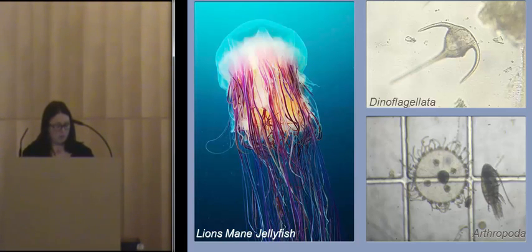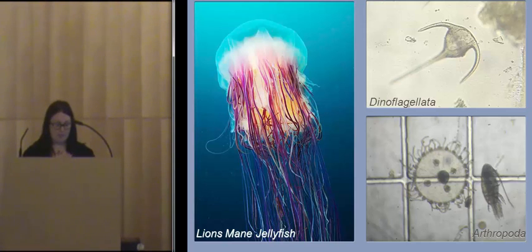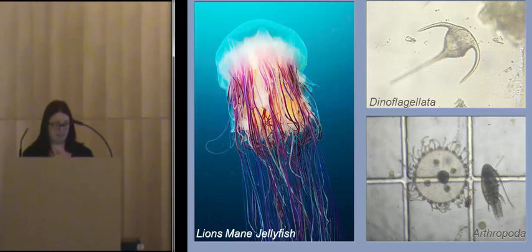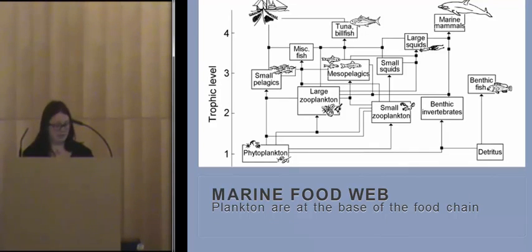A number of zooplankton only remain planktonic for part of their life cycle. These include a variety of benthic invertebrates and fish larvae, and are known as meroplankton. However, species that remain planktonic throughout their entire life cycle are known as holoplankton.